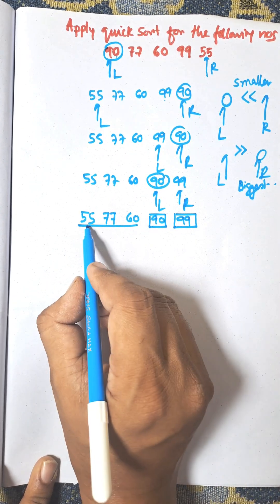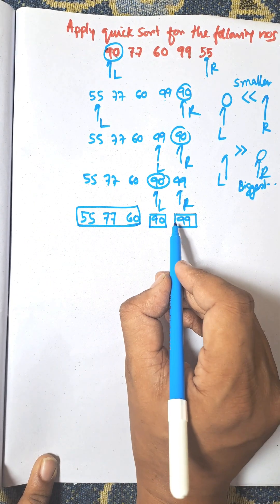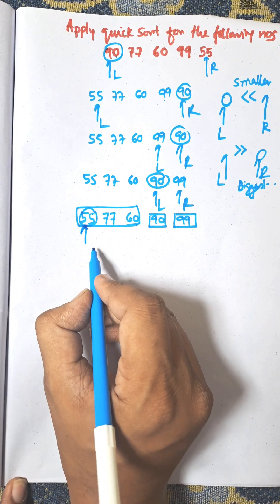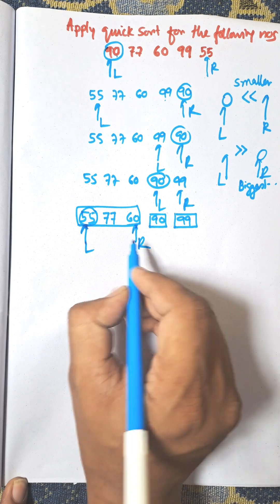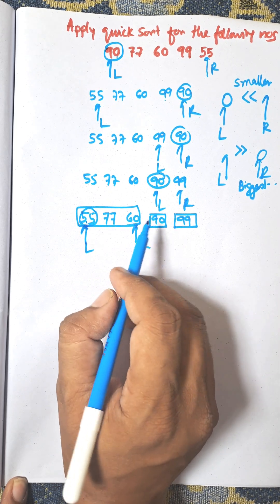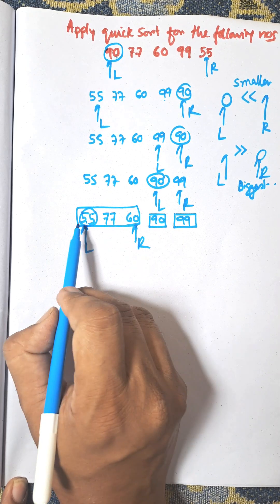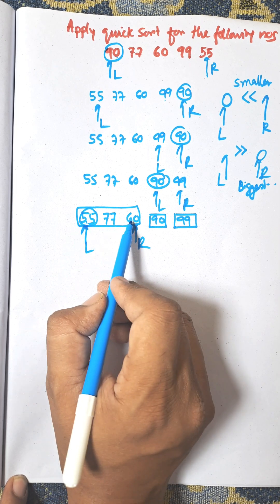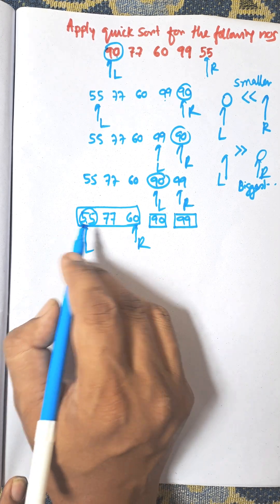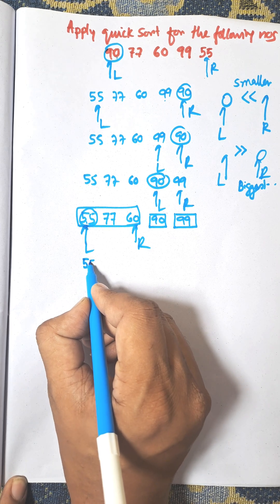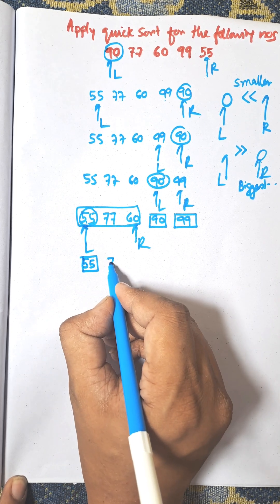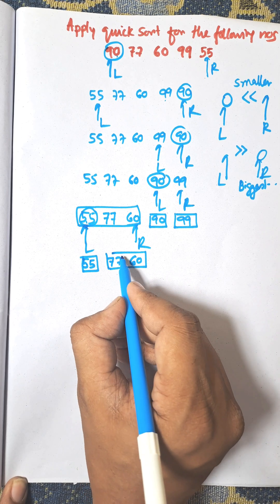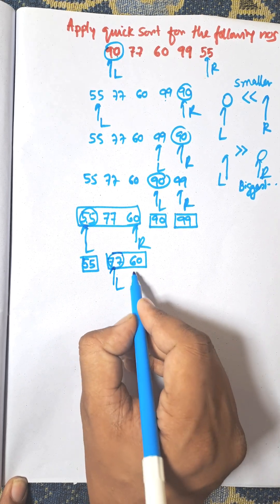This gives us a leftmost partition and a rightmost partition. For the leftmost partition, the new pivot is 55, with L and R set accordingly. Since 55 is not greater than 60, we search right to left for an element smaller than 55. There is no such element, so the pointers cross and 55 is sorted. The next partition is 77 and 60.